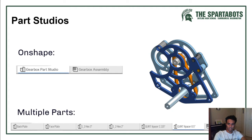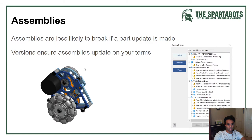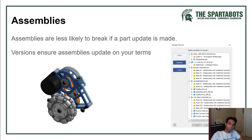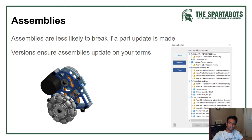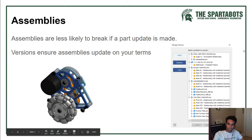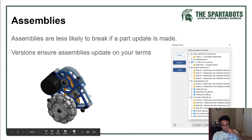Assemblies are less likely to break in Onshape than in other software. When you make updates to parts, version control ensures everyone on your team has access to the latest version. Onshape automatically makes versions whenever you insert a document into another document. If you make a change at the top in a traditional CAD file manager it'll create an error going down, whereas Onshape is much more flexible about changes.